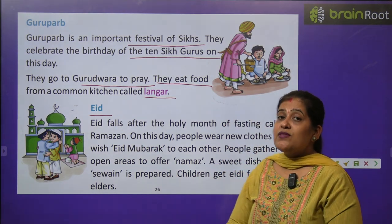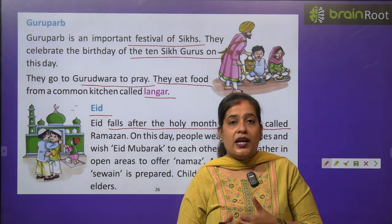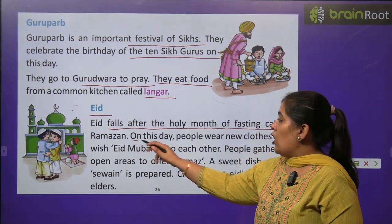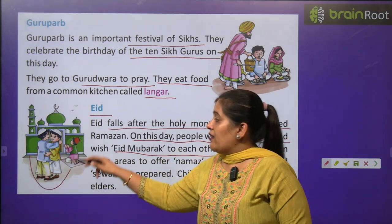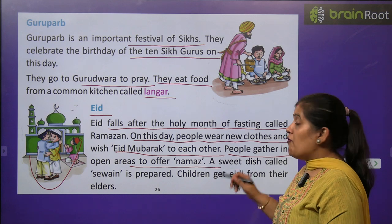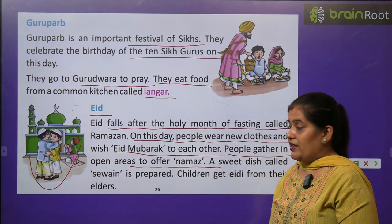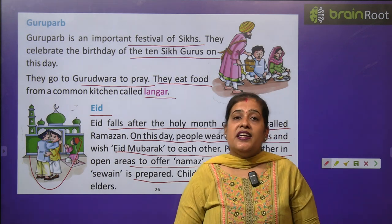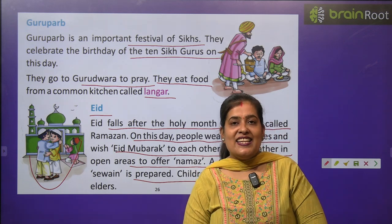Now we will learn about Eid. Eid is the Muslims' holy festival. Eid falls after the holy month of fasting called Ramzan — एक महीने के पावन महीने के बाद Eid मनाई जाती है। On this day, people wear new clothes and wish Eid Mubarak to each other. People gather in an open area to offer namaz. A sweet dish called sevaya is prepared, and children get Eidi from their elders.